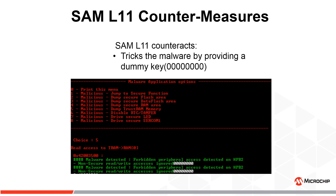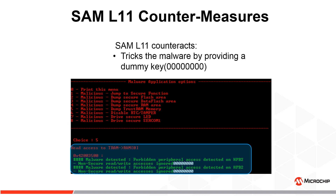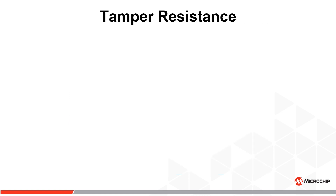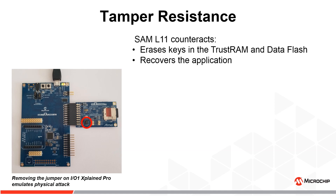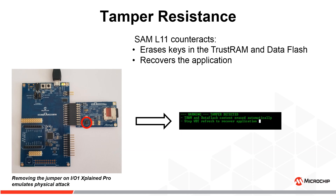Selecting Option 5 emulates malware attempting to read the trust RAM secret keys. In this case, SAM L11 tricks the malware by providing a dummy key with all zeros. Removing the jumper on the IO1 Xplained Pro extension kit emulates a physical attack. SAM L11 counteracts by erasing the keys in the trust RAM and data flash, and recovers the application by securely booting into the trusted zone.